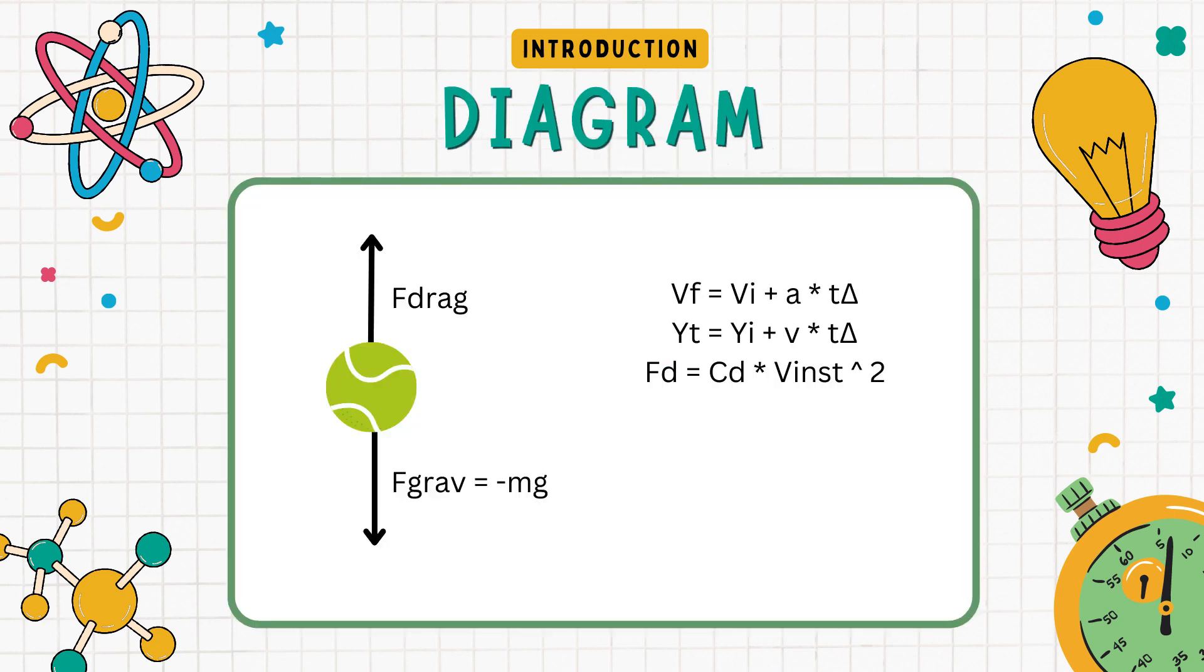Here is a diagram I made to help us visually understand how gravity and drag are both interacting with our falling object in our experiment. As you can see gravity is the force dragging our ball downwards while drag is the force dragging it upwards. And also on the right side you can also see some useful formulas which include final velocity, final position and the force of drag.